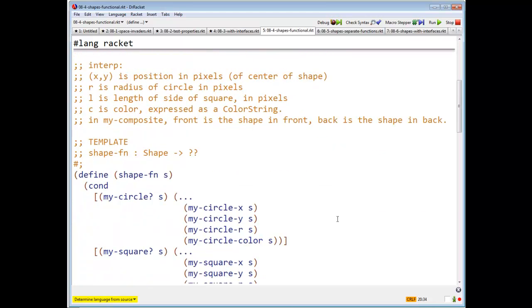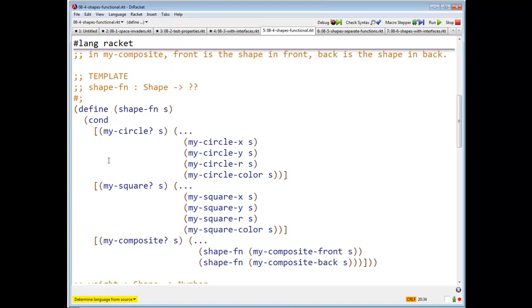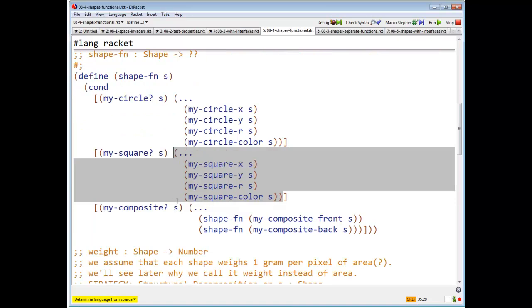So we have our template. What's a template for a shape function? Cond, if s is a my circle, then it's some combination of my circle x of s, my circle y of s, blah, blah, blah. Right, if it's my square of s, then it's some functional combination of the pieces.